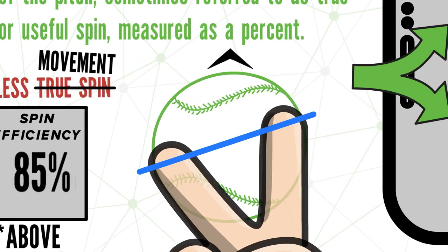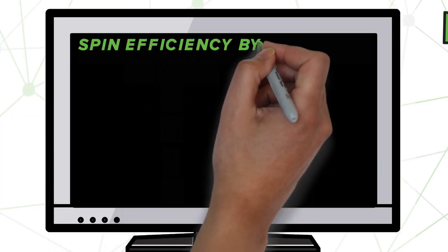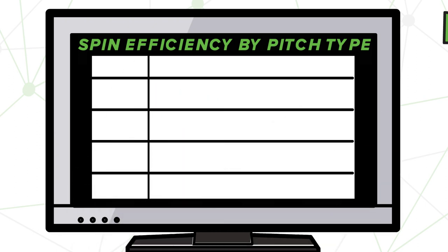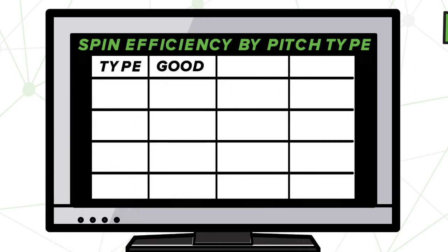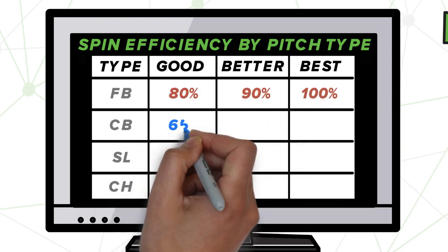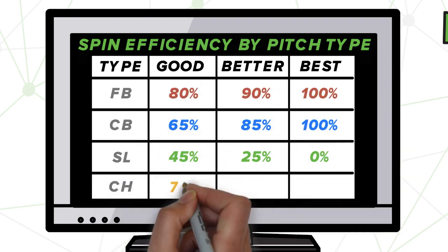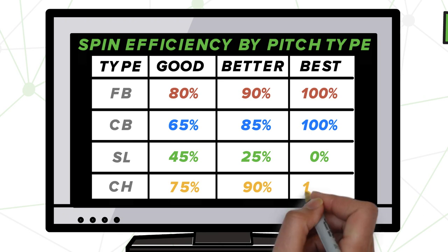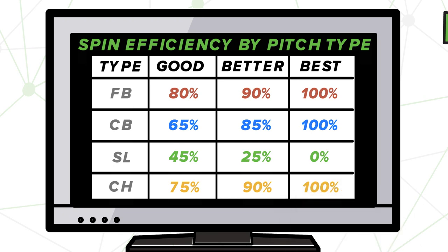A lower spin efficiency isn't always bad — the ideal range changes for each pitch type. Here is a chart with the ideal spin efficiency ranges for each pitch type across all age groups. For fastballs, curveballs, and changeups, a spin efficiency closer to 100% means you'll be using all of the spin that you've put on the pitch. For sliders, a lower spin efficiency is actually going to be ideal. I've seen great sliders anywhere between the 45% and 0% range.